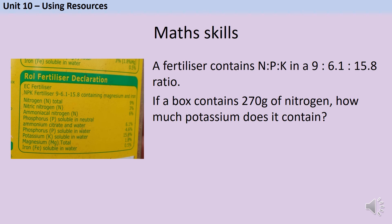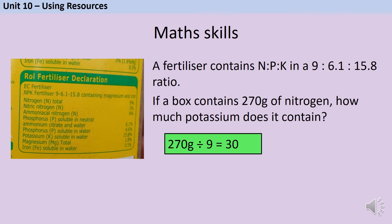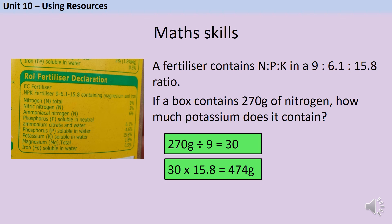A different question might tell you that a fertiliser contains nitrogen to phosphorus to potassium in a 9 : 6.1 : 15.8 ratio. Realistically in a GCSE exam you'd probably get whole numbers, but this comes from a real fertiliser package. If the box contains 270 grams of nitrogen, how much potassium does it contain? Nitrogen and potassium are in the ratio 9 : 15.8. First, 270 ÷ 9 = 30, so 1 part equals 30 grams. Multiplying by 15.8 gives 474 grams of potassium.